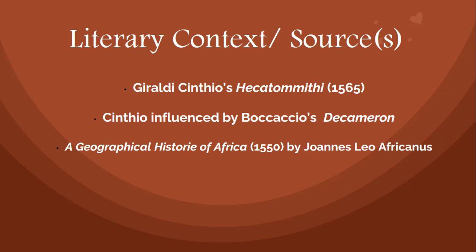For example, Cinthio's focus was on Desdemona, but Shakespeare shifts the focus from Desdemona to Iago and Othello. Although Shakespeare adopted Cinthio's basic story, scholars also believe that the geographical history of Africa by Johannes Leo Africanus, written in 1550, influenced Shakespeare's characterization of Othello — he draws that from Leo Africanus's account of the African people in that book. These are the two most important sources for Shakespeare's Othello.